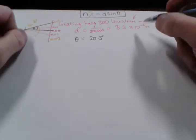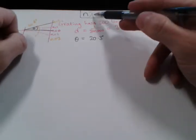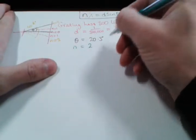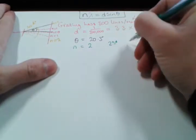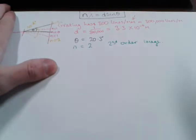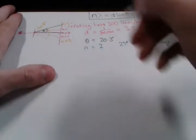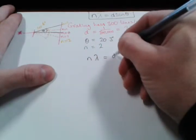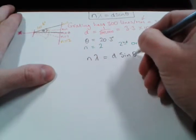We're asked to figure out what the wavelength is. So we now have all of the information that we need because we know that n is equal to 2 for a second order image. So then we start the calculation. How do we start the calculation? We start with the formula: n lambda is equal to d sine theta.